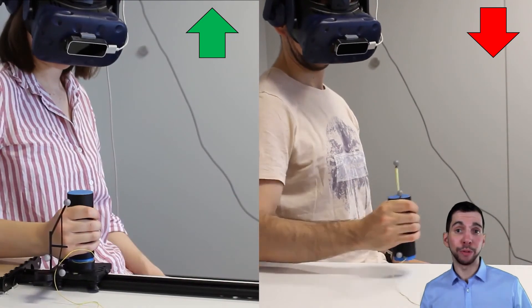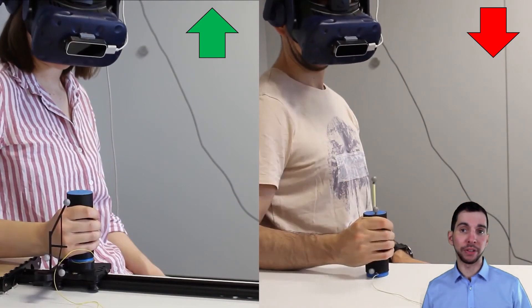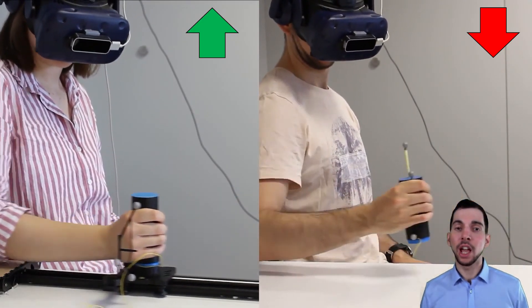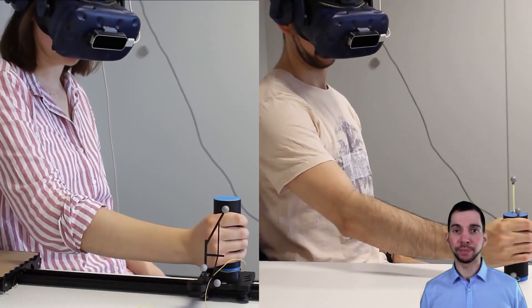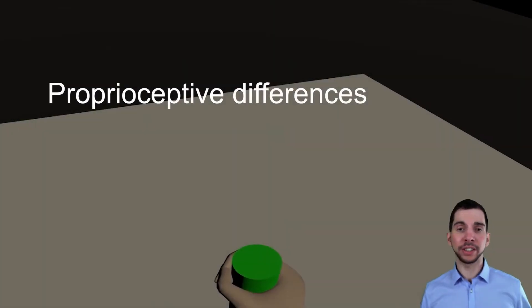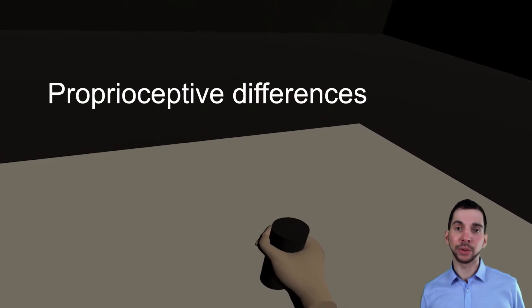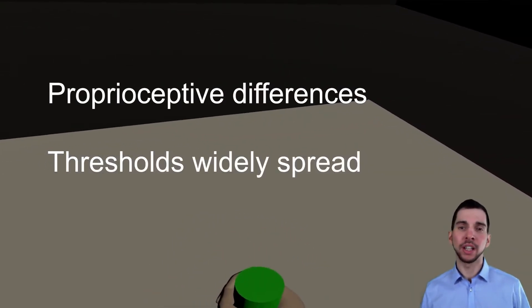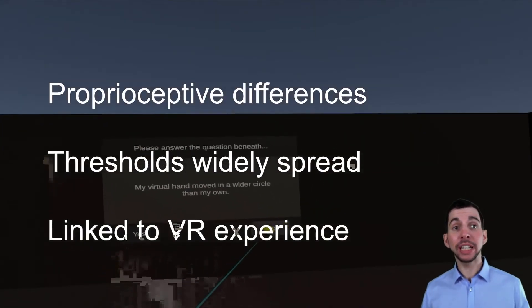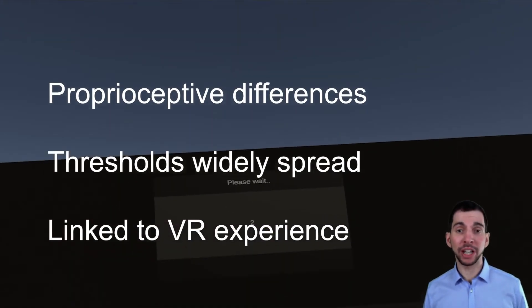So, the more natural, frequently occurring linear movement that you can see on the right-hand side, allows for smaller disparity. Finally, we analyzed individuals' proprioceptive accuracy, revealing that the thresholds are widely spread, and participants' performance may be linked to their prior experience in virtual reality.